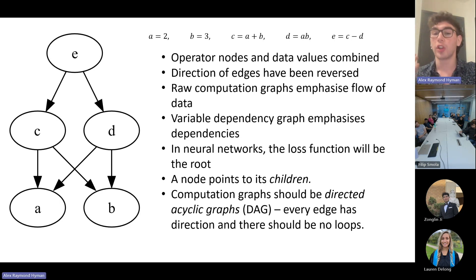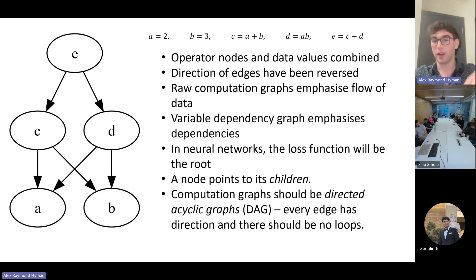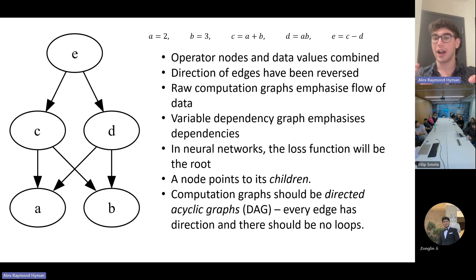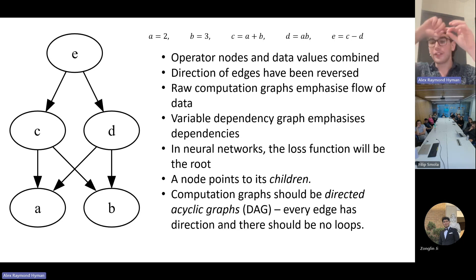The reason we reverse edge direction is because it allows for non-commutative operations where the order of the operands matters — for example division or exponentiation. If the operands pointed to the outputs, there would be no way to know what order the operands were used. The node with no edges pointing into it is known as the root of the graph. In the context of neural nets, the loss function will be the root of the underlying computation graph. If node X points to node Y, then Y is a child of X. Computation graphs should actually be directed acyclic graphs — every edge has a direction and there should be no loops — ensuring a variable will never depend on itself.